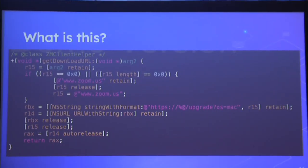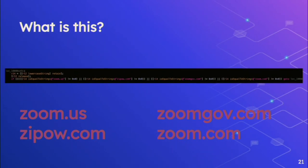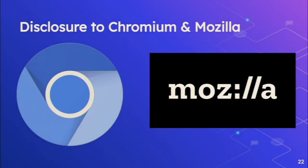I started doing more digging into the web server binary. I saw there was some download logic built in. There was a check for whether a URL you provide uses certain domains, and it seemed like the web client could download an update through this. One of the domains, zoom.gov, was scheduled to expire in about four days. I ended up reporting this to both the Chrome and Mozilla teams.